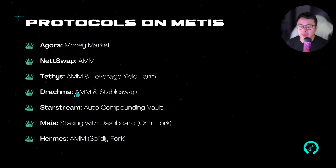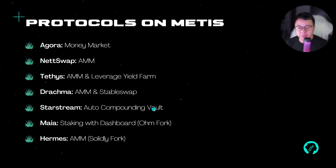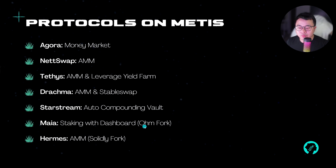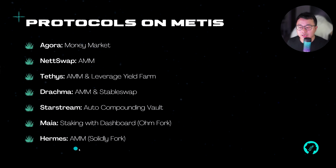Dragma is like Curve — they have AMM and StableSwap but only USDC and USDT, no DAI yet, which would be useful since DAI is used in some pairings on Tethis and NetSwap. StarStream is your auto-compounding vault, similar to Beefy, but with a different tokenomics — it's actually pretty high emission, so check the docs before buying. Then there is Maya, which is like an OHM fork with some differentiating features coming. And Hermes, which is an AMM Solidly fork — not yet out but emissions begin soon, so you might want to look at it if you're interested in a Solidly fork protocol on MATIS.